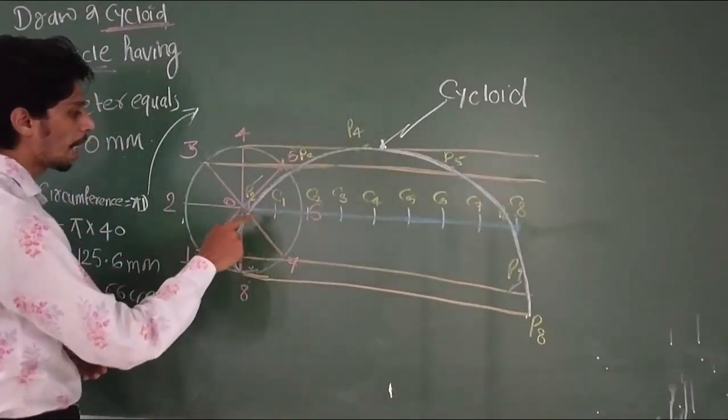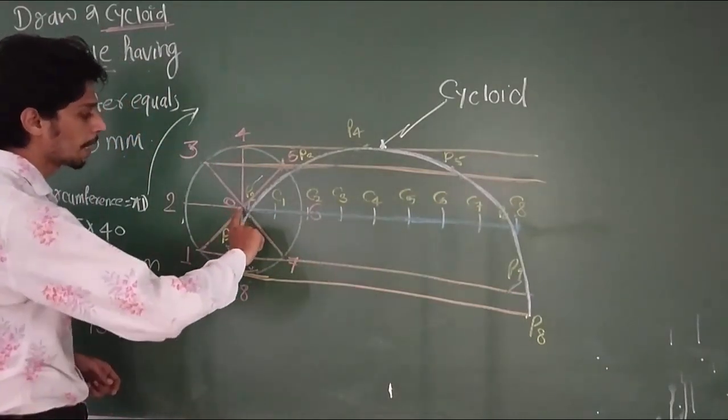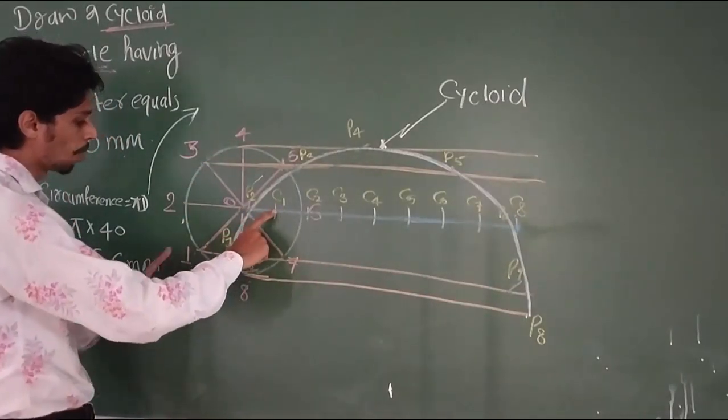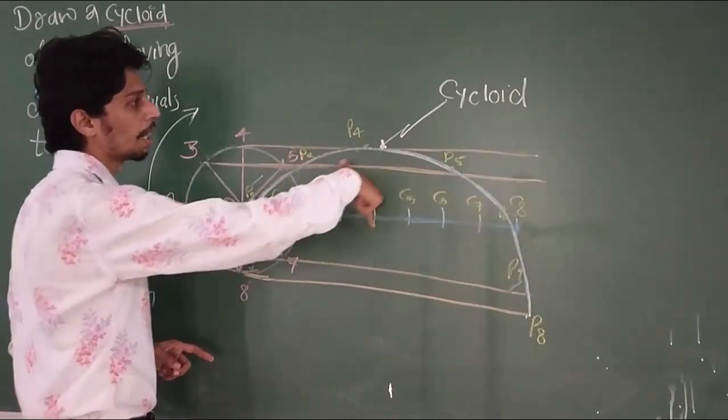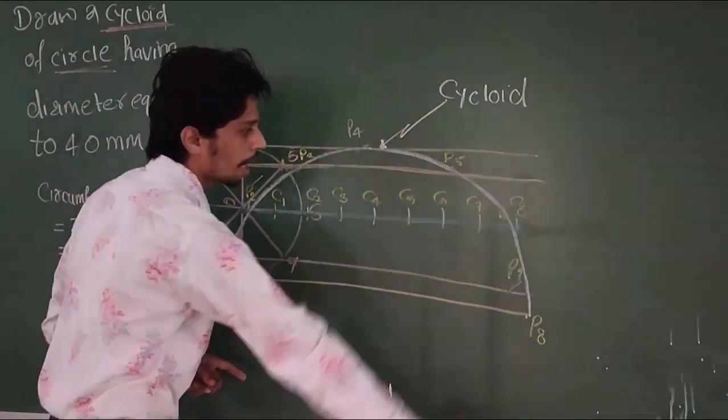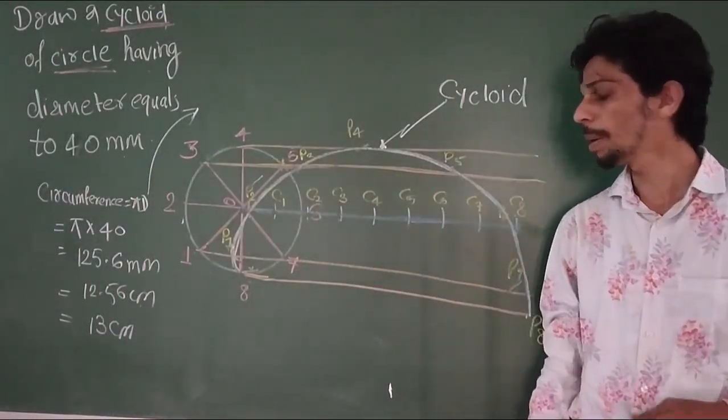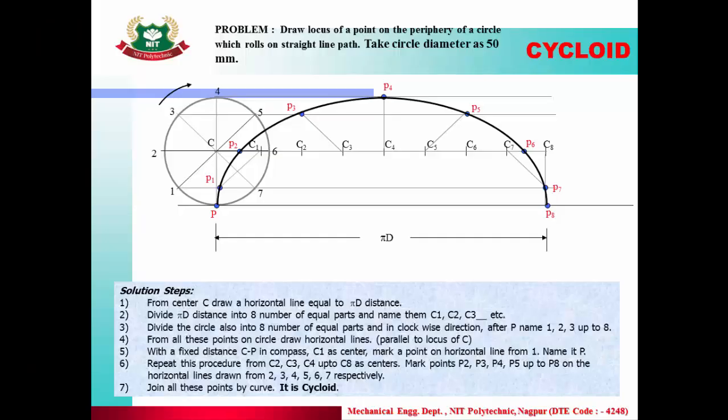Draw the base line equal to circumference and divide it. Draw vertical lines from each division. Use arcs with radius R to find the cycloid points, then connect them.